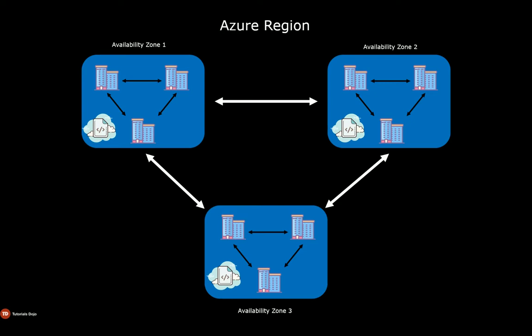Think of a scenario where you have a WordPress application that is only deployed on Availability Zone 2. After quite some time, Availability Zone 2 experiences an outage. What happens? Your WordPress application will also be unavailable.